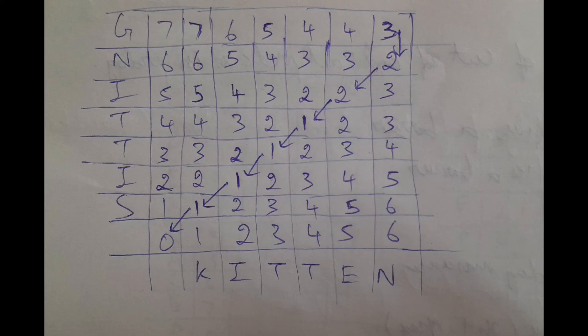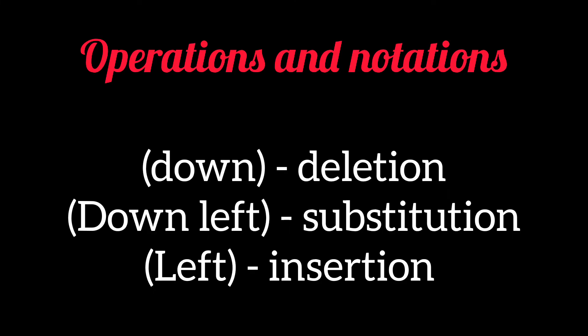In the first one, s should be substituted with k. These are the operations used in backtracking: when there's a down arrow, we delete a letter; when there's a left down, we substitute; and when there's a left, we insert.